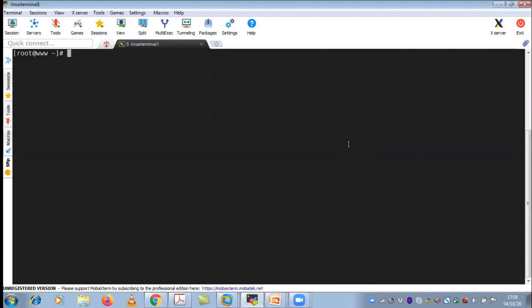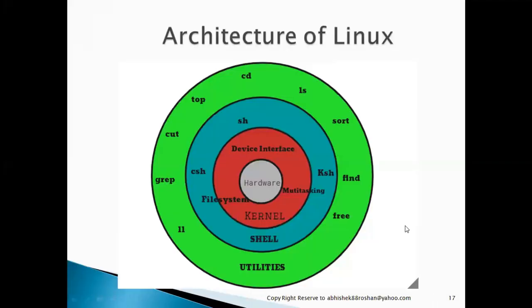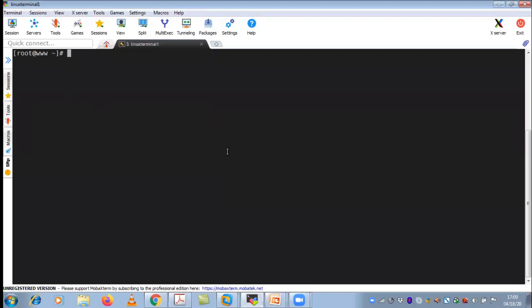If you want to know the hardware information of your Linux operating system, as you can see in this diagram — if somebody in your production environment or IT organization wants information about the hardware, you're not going to raise a request to the data center guys. You should be able to do it from your Linux operating system. There is one command called the dmidecode command.